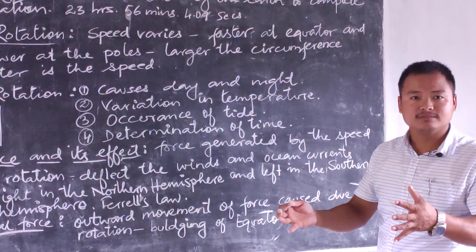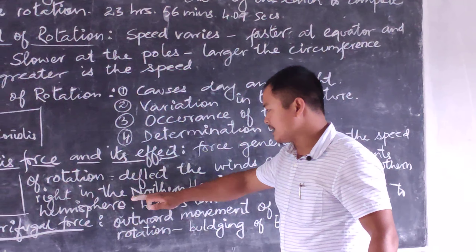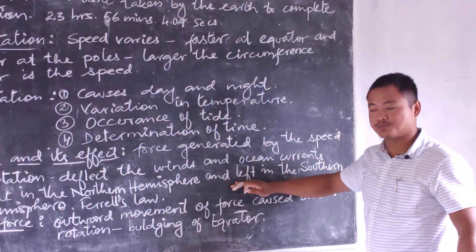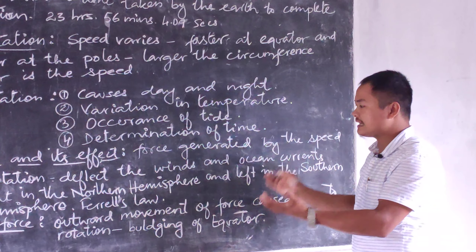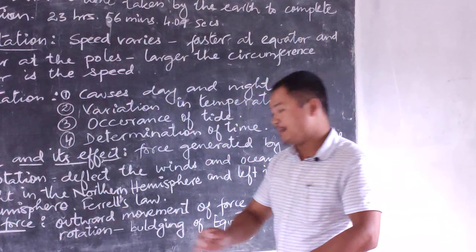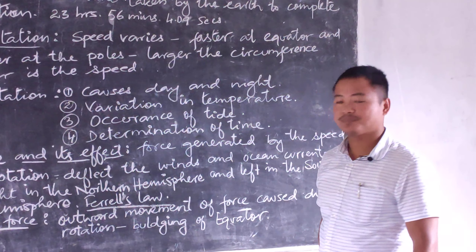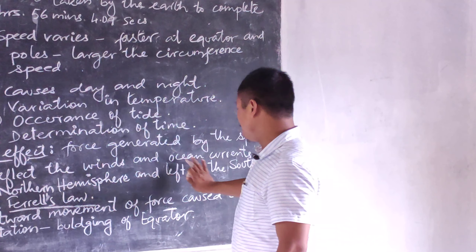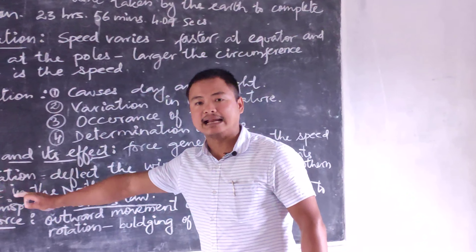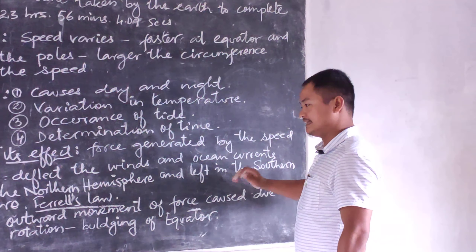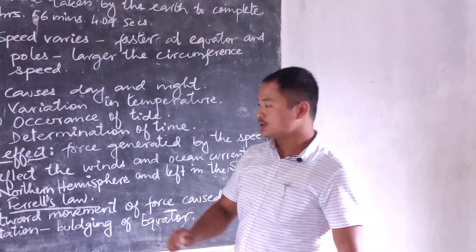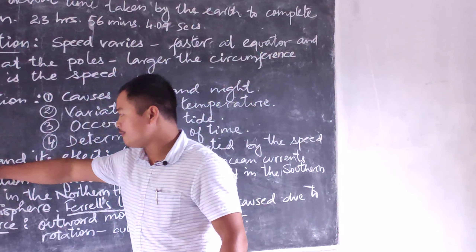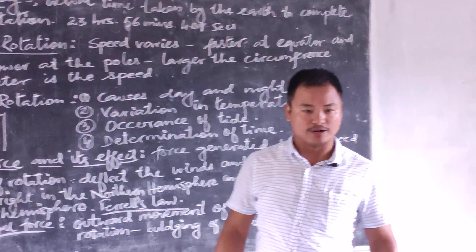The deflection takes place toward the right in the northern hemisphere, while in the southern hemisphere the deflection takes place toward the left. This was clearly stated by William Ferrell in Ferrell's Law, which states that owing to the rotation of the earth, winds and ocean currents deflect towards the right in the northern hemisphere and towards the left in the southern hemisphere. This is what we call the Coriolis effect.